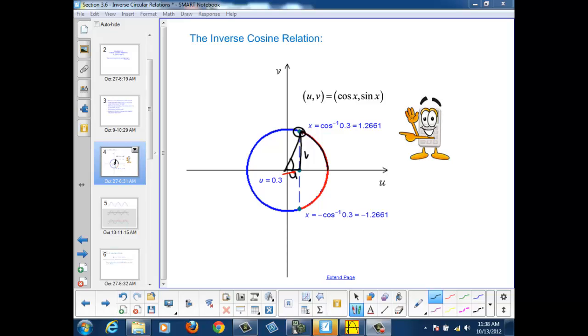and the vertical side is v, and since it's a unit circle, the hypotenuse is 1. So the cosine of our reference triangle angle would be u over 1, which is just the u coordinate.